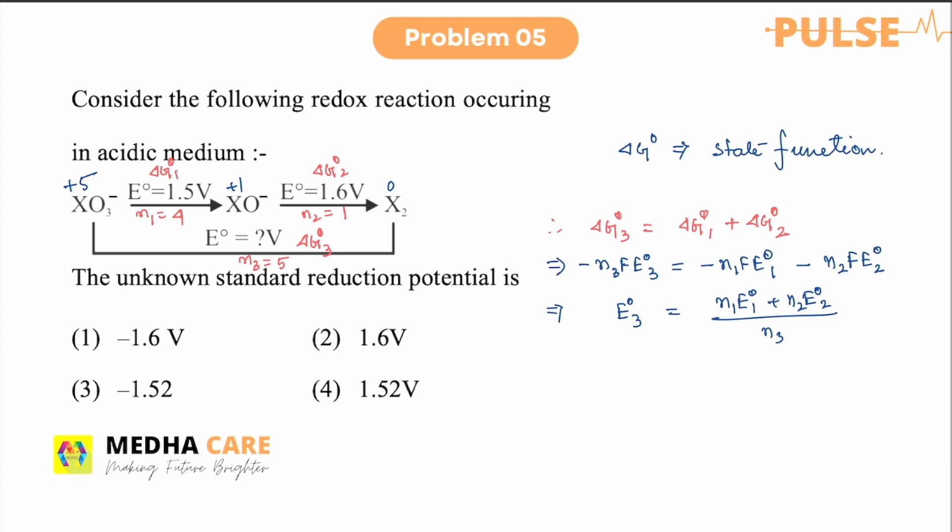All the values are given here. So n one that is four and e naught one that is 1.5 plus n two that is 1 and it is 1.6 divided by n three, n three is five. Generally n three is n one plus n two. So that is equal to n two. So e naught three. If we calculate that one, that will be 1.52 volt. So the correct answer will be four.